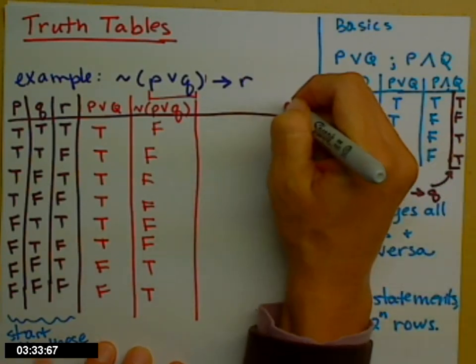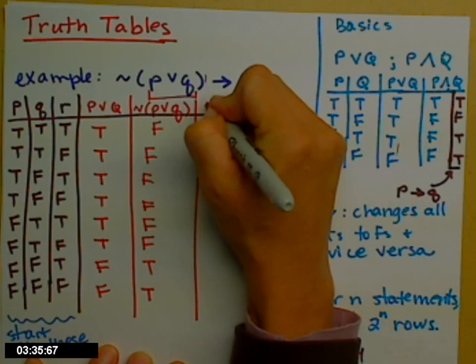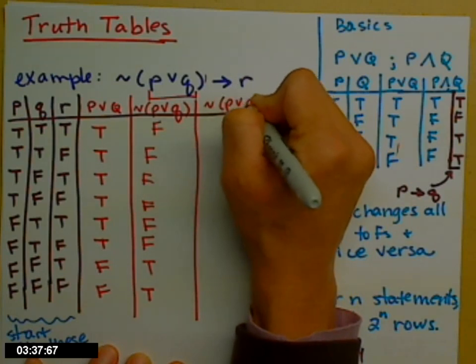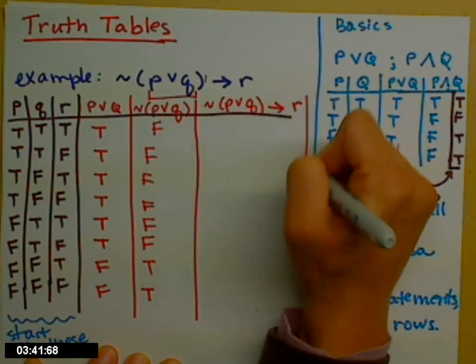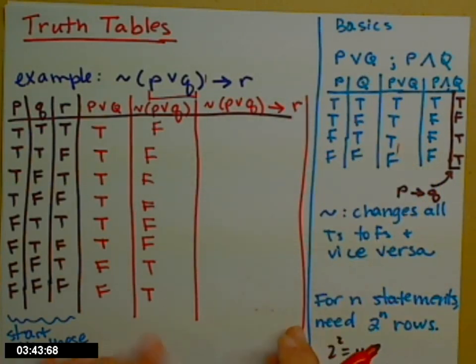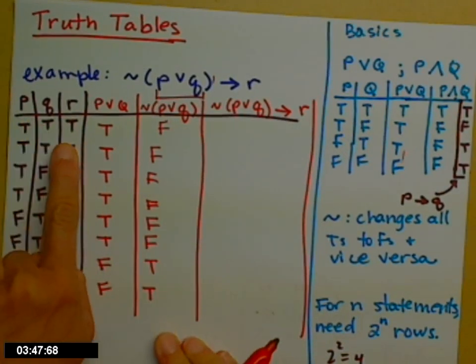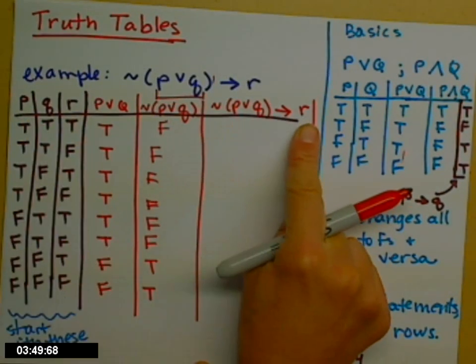I'm ready to put it all together now. I'm ready to do my answer row. So not P or Q, if that, then R. So this I look at first, and then I look back to R for this one. I don't have to recopy R here, because I'm just going to... So FALSE, then TRUE, so that's going to be TRUE.